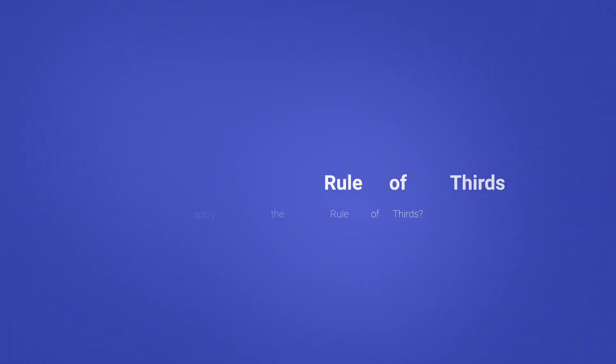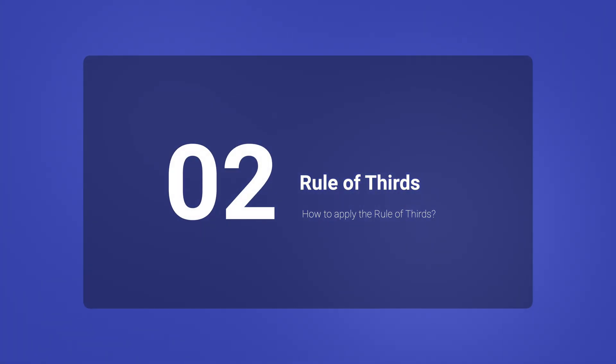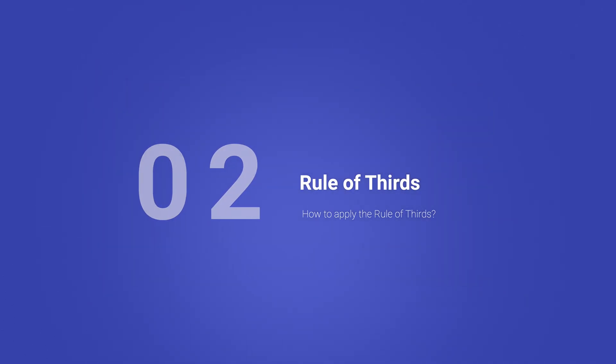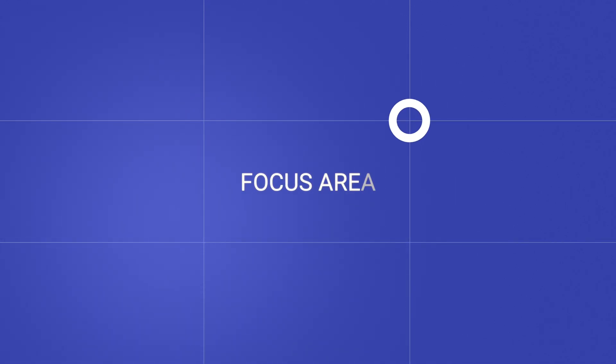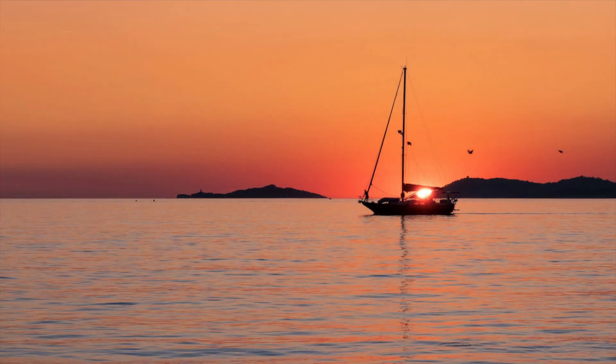Now let's look at rule number two, which is the rule of thirds and how to apply it in your presentation. This rule is often used by photographers — you split your canvas with two horizontal lines and two vertical lines. At the intersections, these are the focal points of attention where people look first.